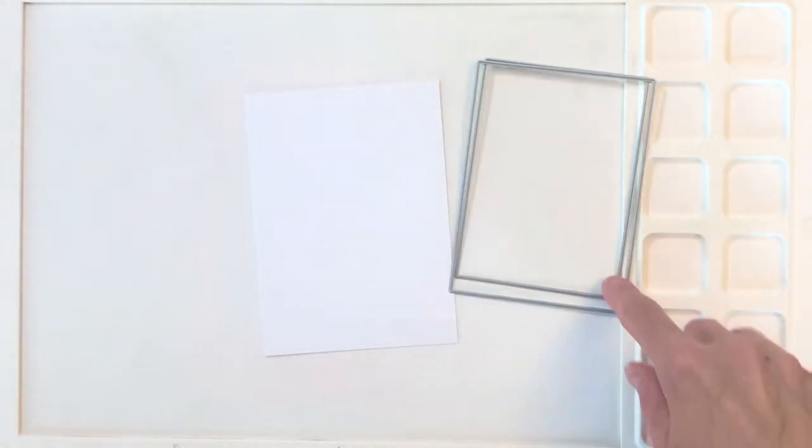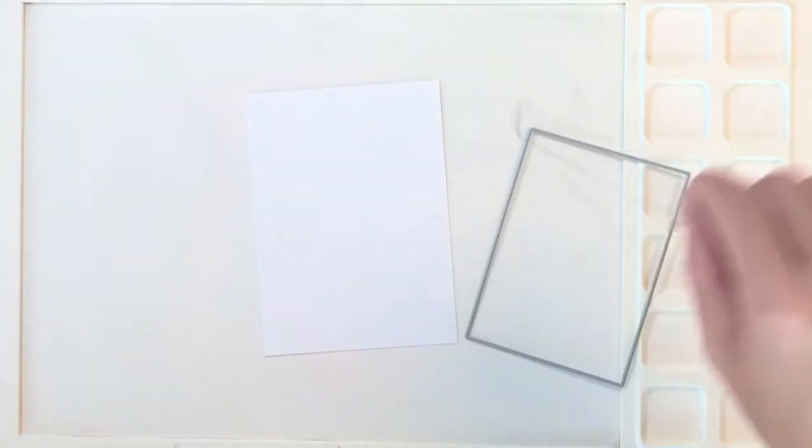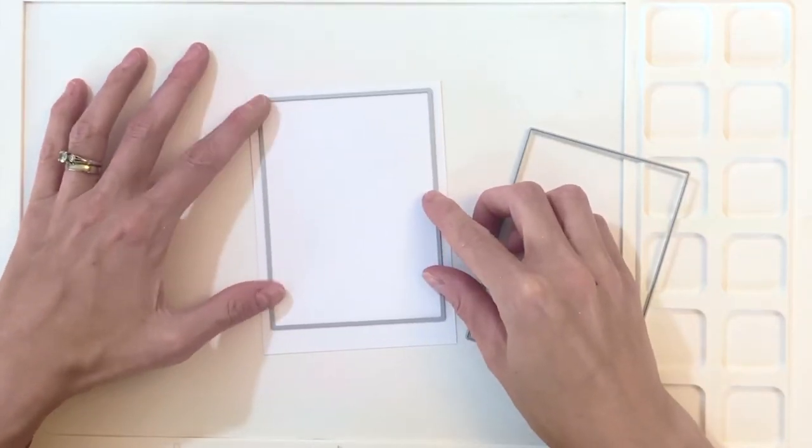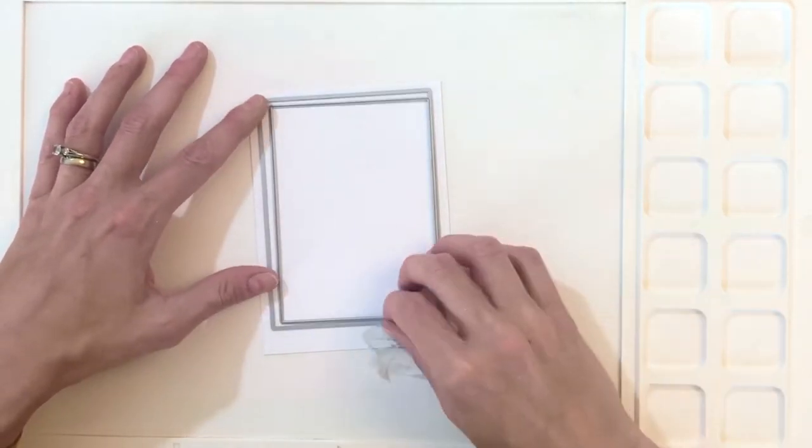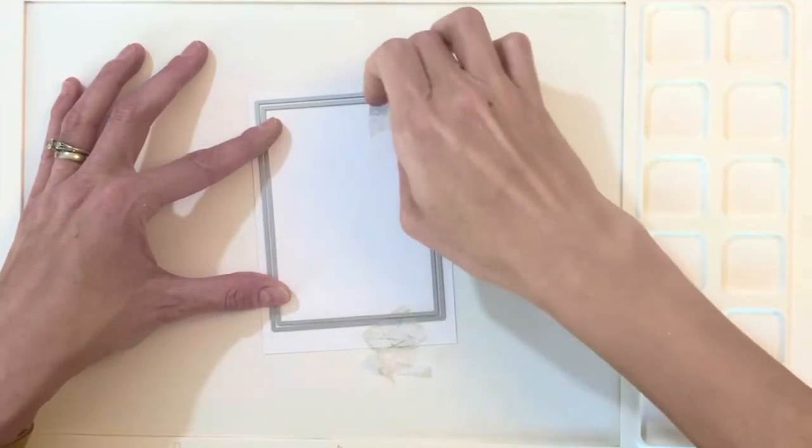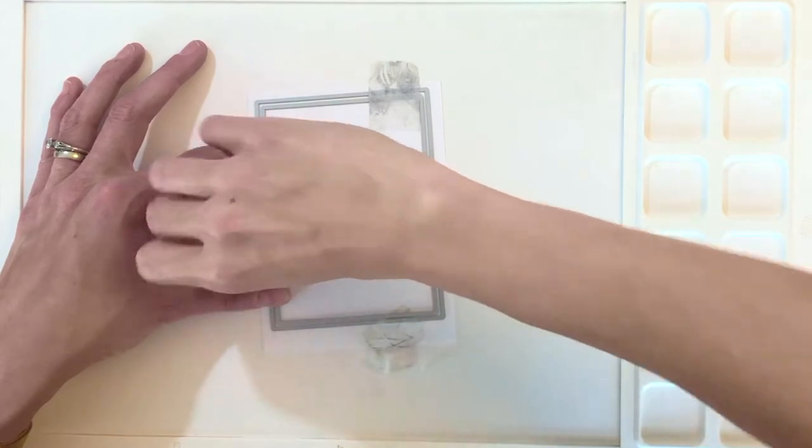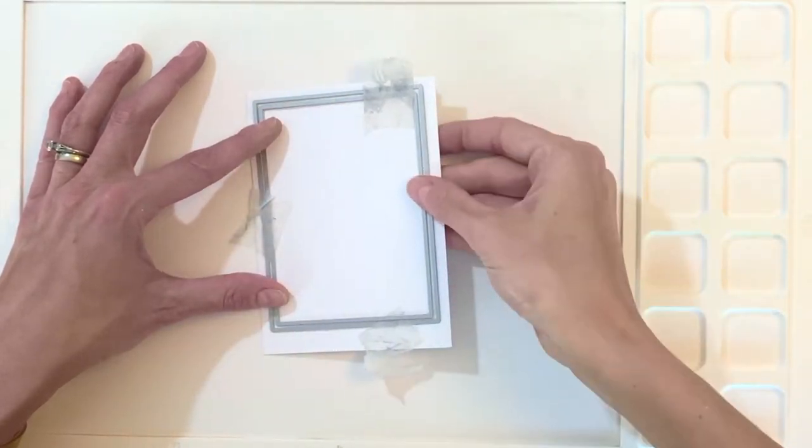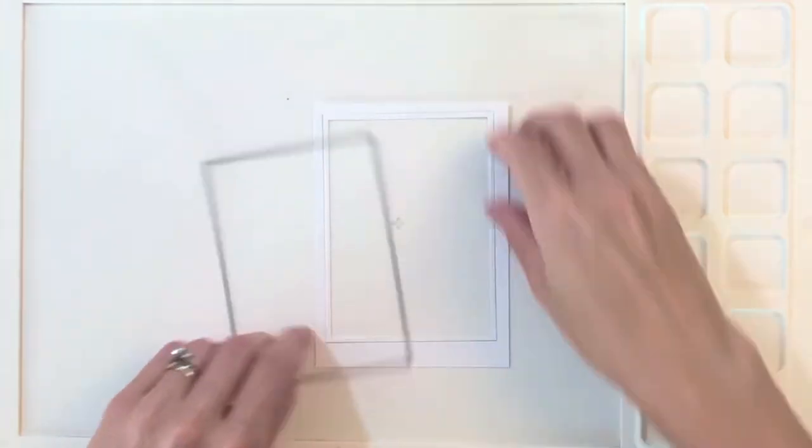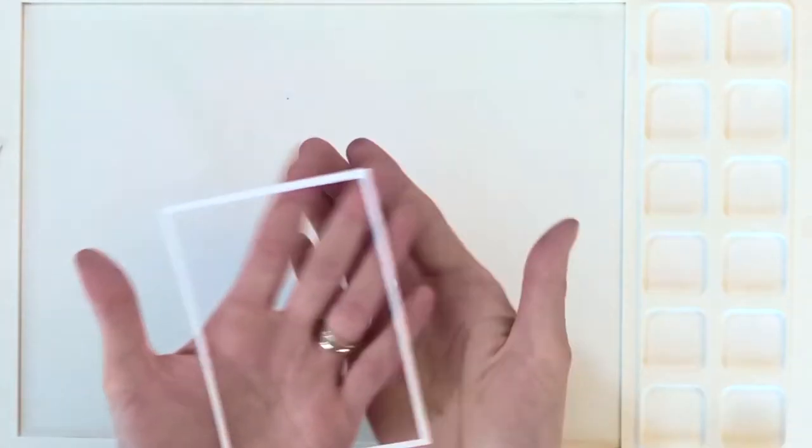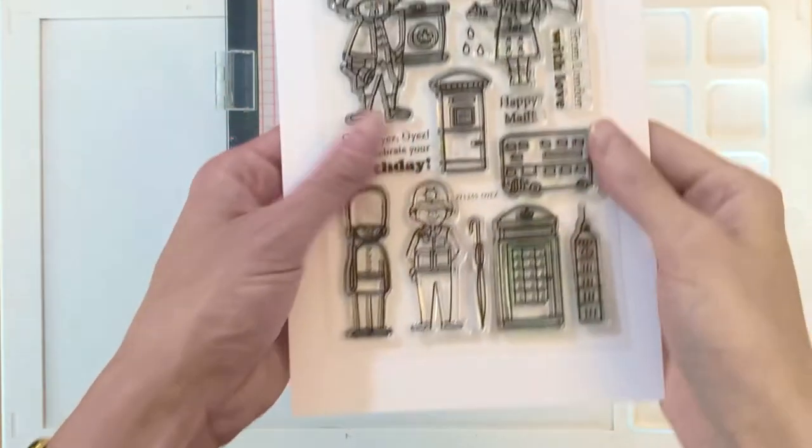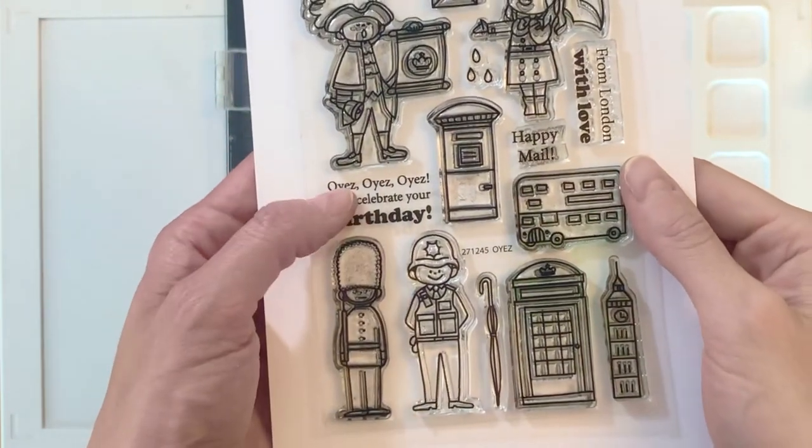Now I'm going to create a frame. I have the fourth and fifth largest die from the A2 Layers die set and I am going to place them down on some white cardstock, one inside of the other, making sure the gap between the two is even on all sides. I'll use some micro pore tape to hold those two dies in place and then run it through my die cutting machine. That just creates a beautiful little frame that's going to kind of narrow my card space.